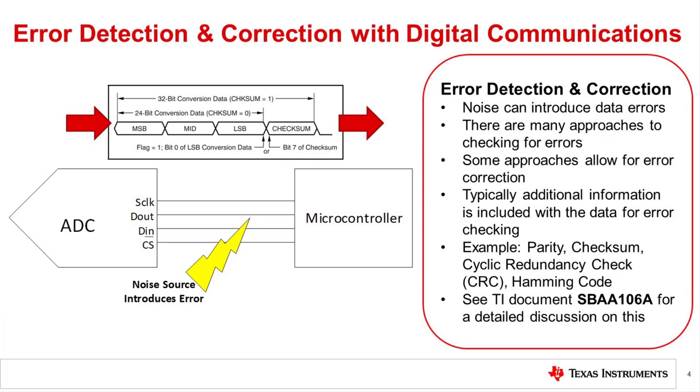One way to mitigate data communications errors is to use error detection and correction. From an ADC perspective, some devices have this feature built into the device. Basically, when the ADC transmits conversion results to the microcontroller, some kind of additional information is appended for data integrity verification. Some fairly simple communication methods for error checking include checksum and parity. These methods can detect if a communication error occurs, but they will not detect all errors.